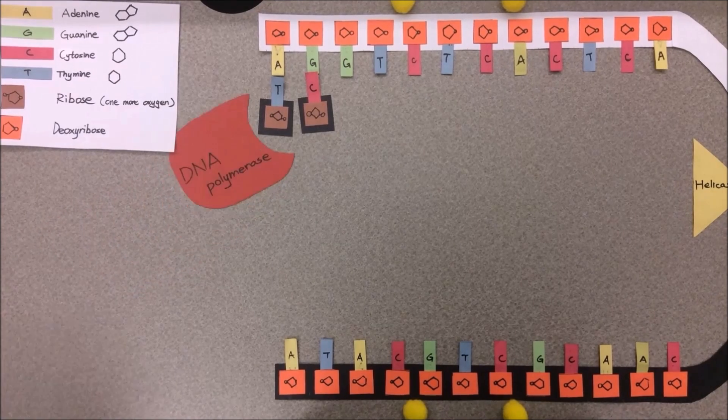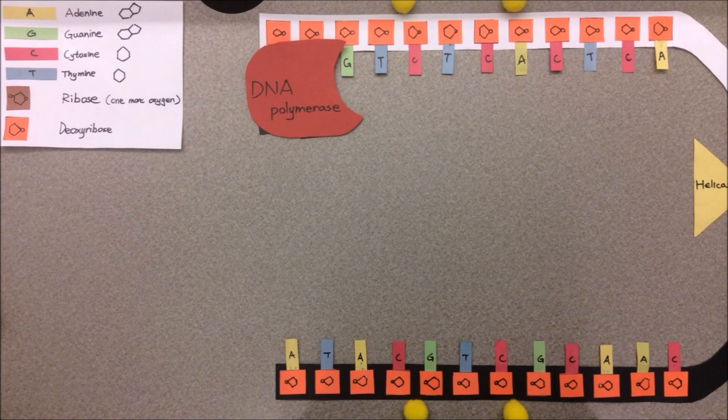The DNA polymerase then binds to the leading strand and simply sits near the replication fork, moving as the fork does and starts adding on the complementary nucleotide bases accordingly.